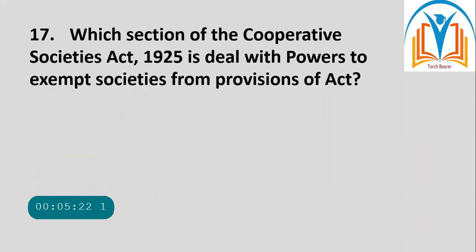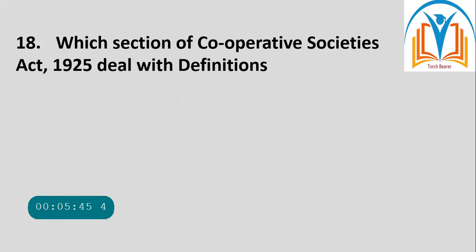Next question: Which section of the Cooperative Societies Act 1925 deals with powers to exempt societies from provisions of the Act? Section 67 deals with powers to exempt societies from provisions of the Act.